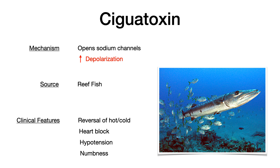The source of ciguatoxin is reef fish. The really unique clinical feature for ciguatoxin is the reversal of hot and cold sensations. You also see heart block, bradycardia, hypotension, and numbness. At the end of this video there's a summary slide, and I'll point out the really unique clinical features — that's what you can bank on if you don't want to memorize all of this.